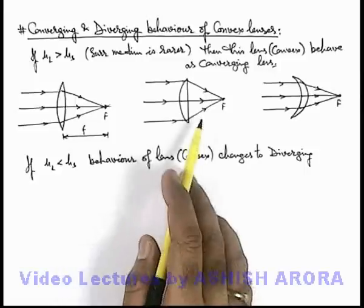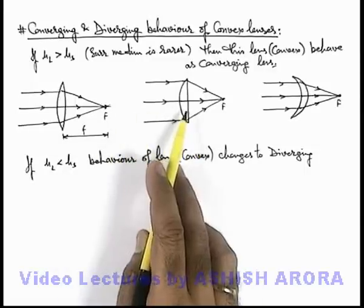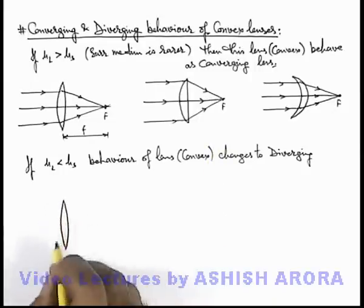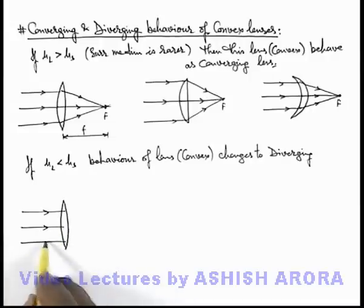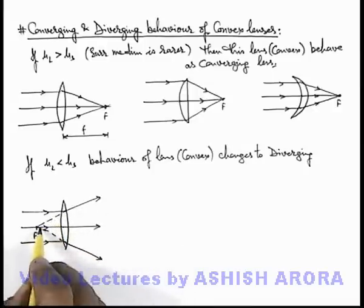That means if the surrounding medium is rarer, it converges parallel rays which are incident onto the lens. And say if the situation is like this when the surrounding medium is denser, then in that situation when parallel rays are allowed to incident onto it, these are diverged after refraction at the two surfaces of the lens, and the focus of the lens will be virtual.